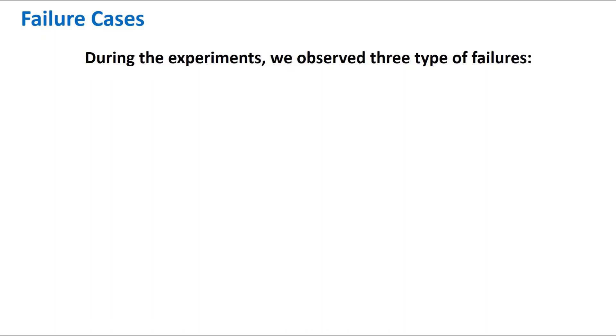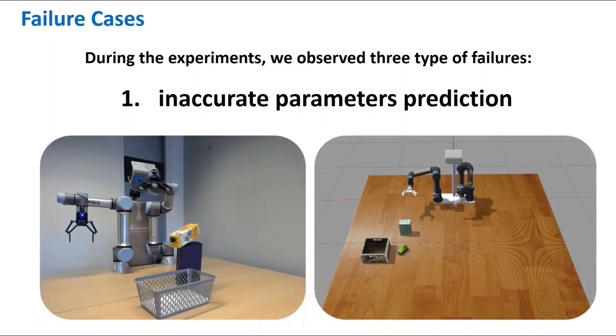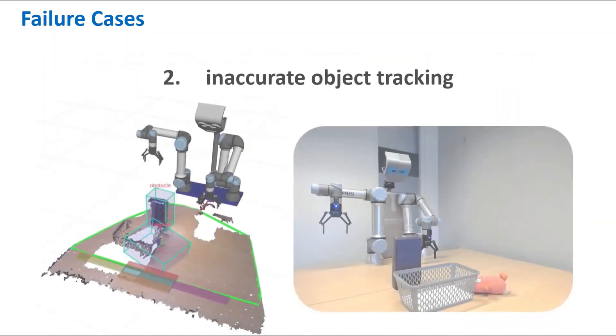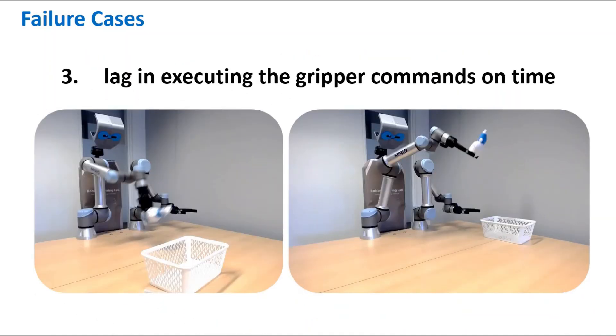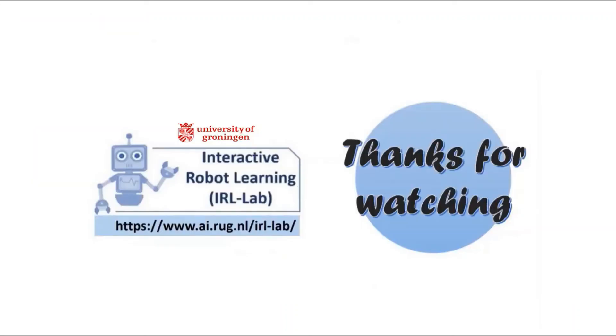During the experiments, we observed three types of failures. They are including inaccurate parameters prediction, inaccurate object tracking, and lag in executing the gripper commands on time.